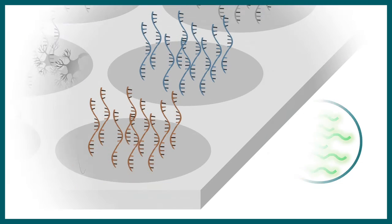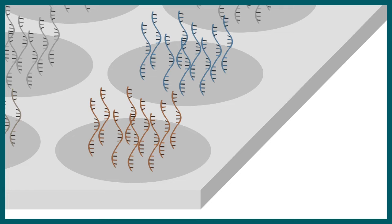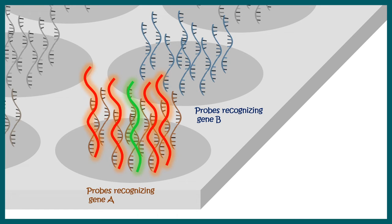So now we are zooming into one particular spot of this microarray chip. Now whenever we add particular cDNA, this would hybridize to these portions of this spot. So here we can understand for probes corresponding to gene A, samples that are coming from the neuron are hybridizing more compared to samples coming from the epithelia.